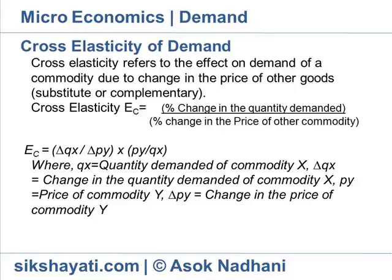EC = +0.50 indicates that A and B are substitute goods. If the quantity demanded of X increases by 10% when the price of B decreases by 20%, the cross-elasticity of demand between A and B will be: EC = ΔQA / ΔPB = 10% / 20% = −0.50. EC = −0.50 indicates that A and B are complementary goods.